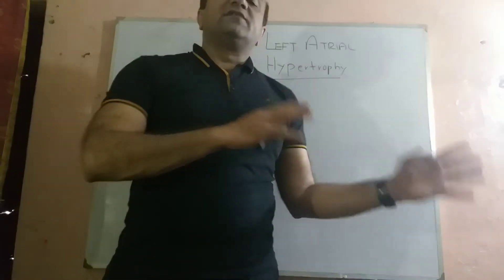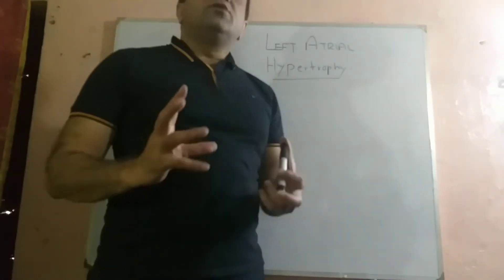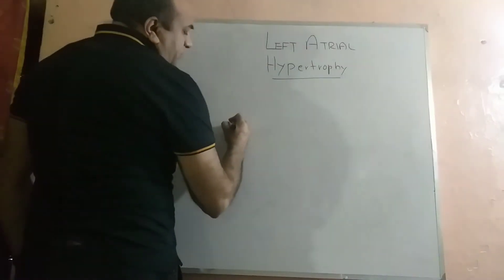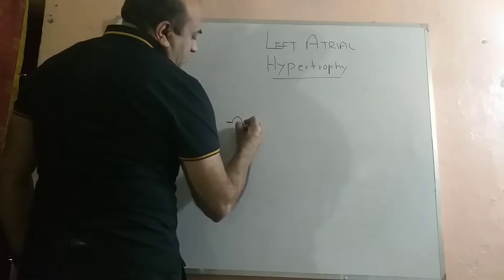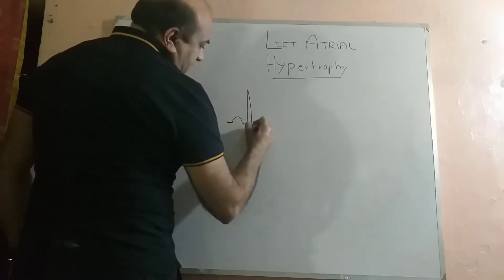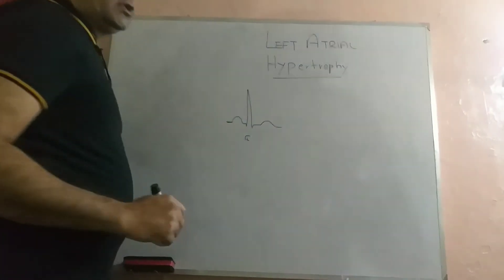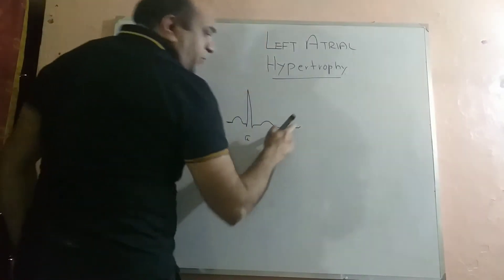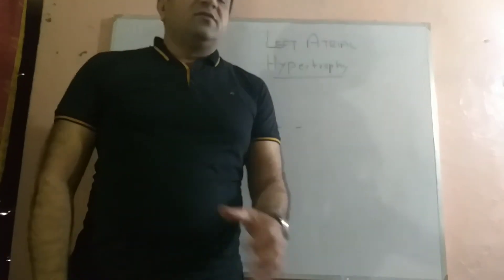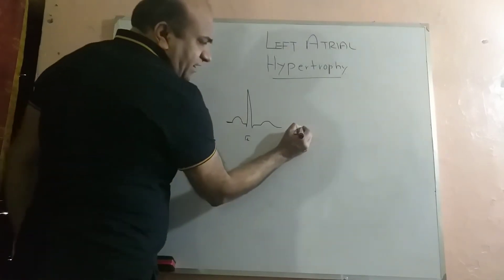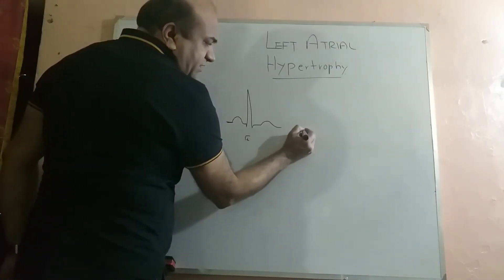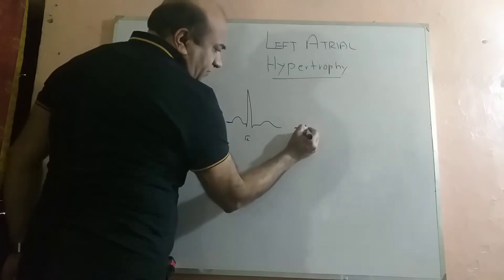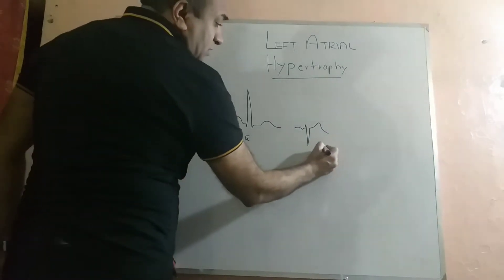Lead 2 and Lead V1 are considered rhythm leads because the rhythm is generated by the SA node, which is located very close to both leads, and they can better pick up the rhythm compared to other leads. In a normal Lead 2, we see a smooth P, Q, R, S, T morphology. In Lead V1, the first upward portion is made by right atrial depolarization, and the second portion below the isoelectric line is made by left atrial depolarization, followed by a small R wave and the rest of the QRS complex.